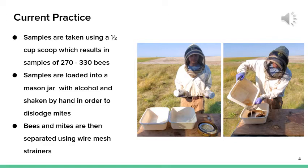The current practice for separating viral mites from honeybees is as follows. Samples are taken using a half-cup measuring scoop, which results in a sample of 270 to 330 bees. 300 bees is the ideal number, which is approximately 1% of a healthy summer colony. Samples are then loaded into a mason jar with alcohol and shaken by hand in order to dislodge the mites. Bees and mites are then separated using wire mesh strainers and a series of sieves.